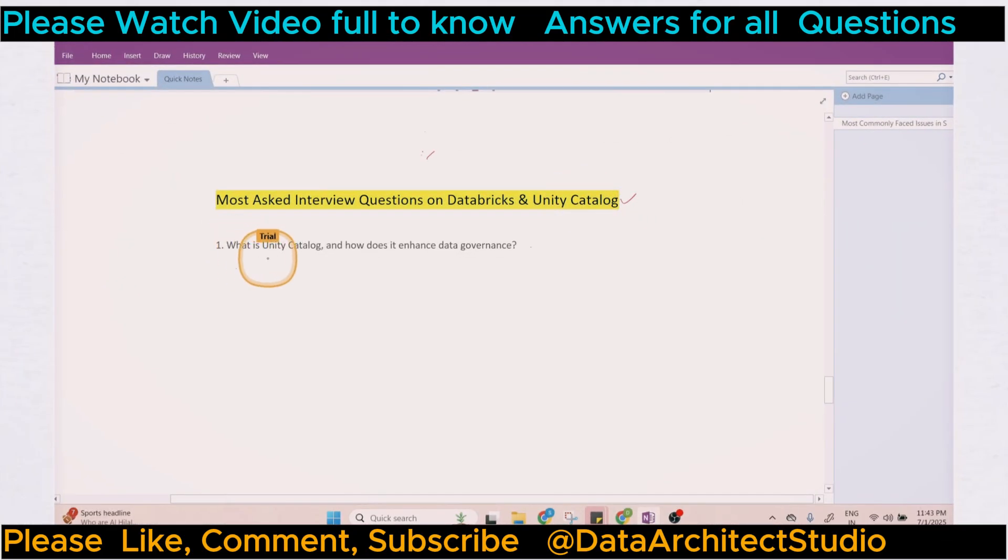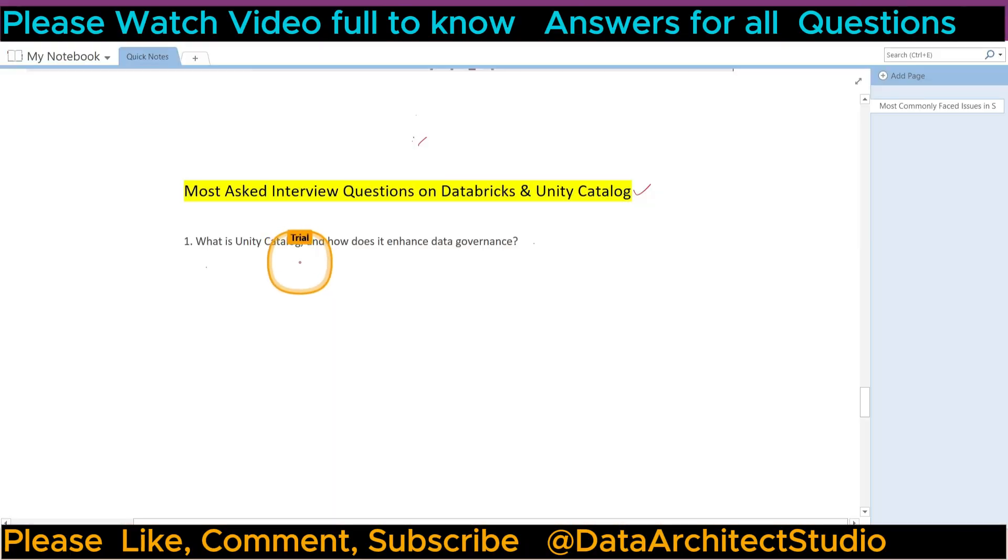So the very first question is: what is Unity Catalog and how does it enhance data governance? So Unity Catalog is actually a data governance feature that can support full data governance features like data security, data lineage, data sharing, security, and many other things. It also has metastore catalog and can maintain the metastore and many other features.